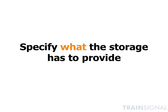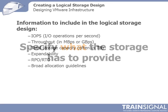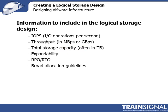Instead, we're going to specify what the storage has to provide — essentially maximum values or requirements that the storage has to be able to supply to the environment. We do that by specifying values like the total number of IOPS — IO operations per second — a measure of transactions occurring on the array. We'll also specify total throughput in megabits, megabytes, or even gigabytes per second, and total storage capacity typically in terabytes.